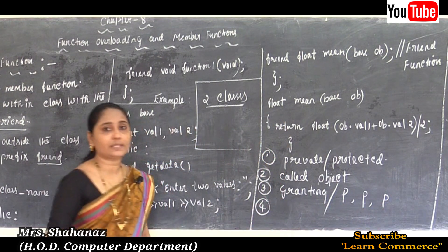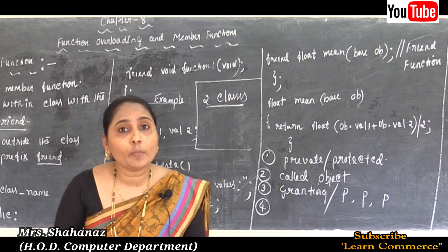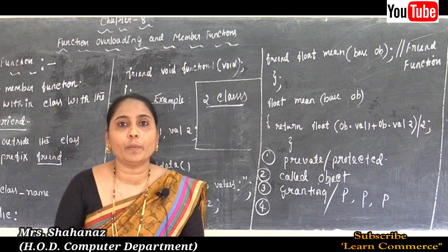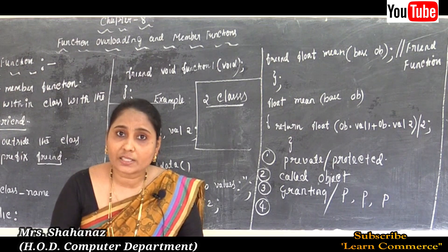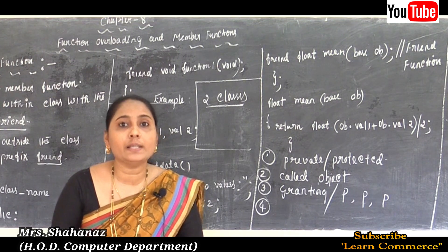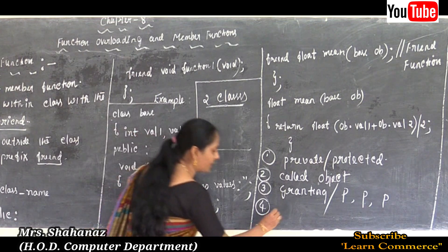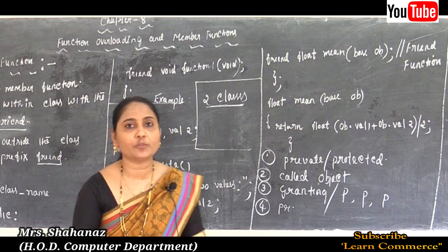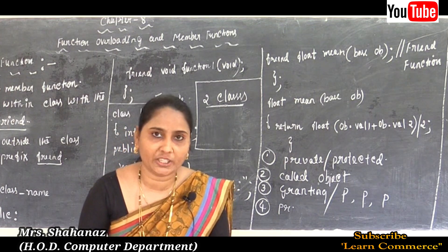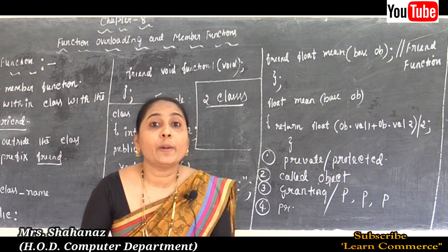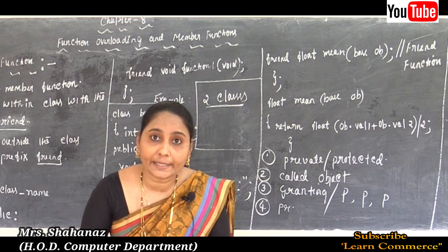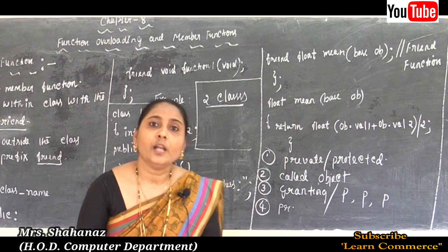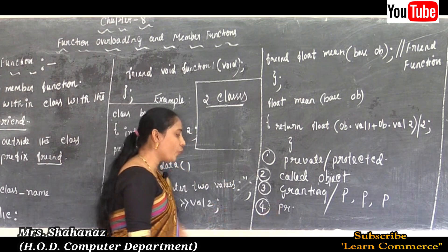Fourth note: friend functions are normal external functions that are given special access privileges — meaning they have the right to access the private and protected members of the class.